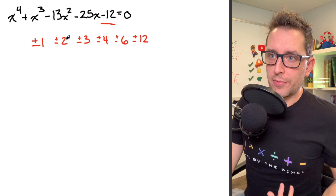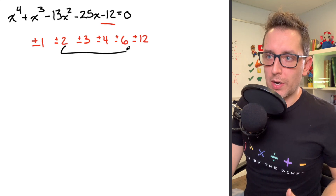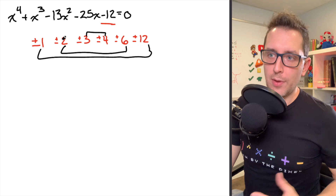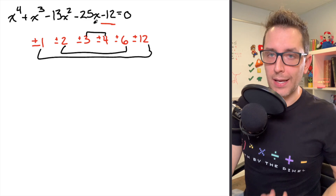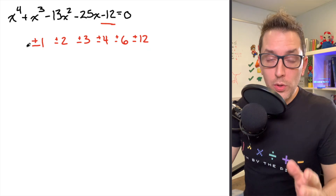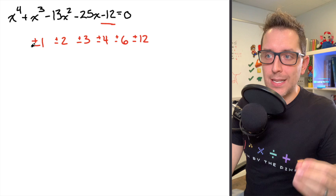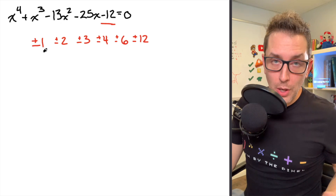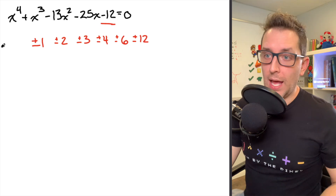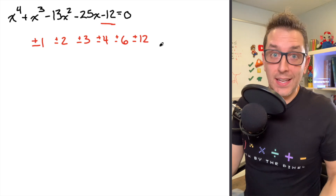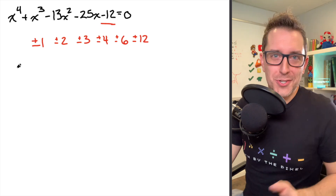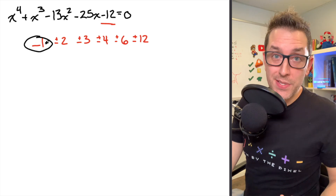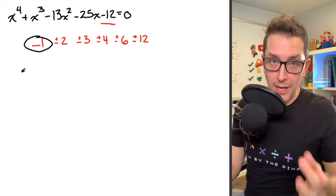Just remember that the product of a few of these pairs will give me 12: 6 times 2, 4 times 3, 1 times 12, and if I make any one of those negative, I'm going to get negative 12. The goal here is to find a factor that when substituted in for x will give me 0. I'm going to start at 1 and work my way up to the biggest factor. When I substitute in negative 1, I end up getting 0.